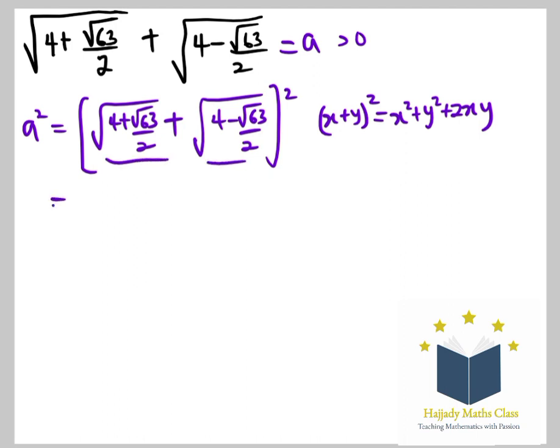So squaring this is going to take away the square root. So I'm going to have 4 plus root 63 over 2. Squaring this is going to take away the square root, which is going to stand for my Y. 4 minus root 63 over 2 plus 2 times X times Y, which is plus 2.